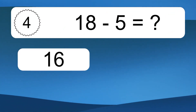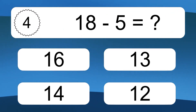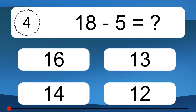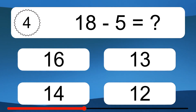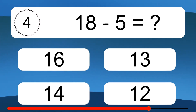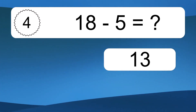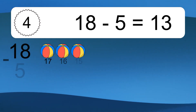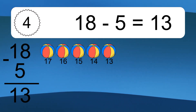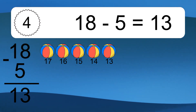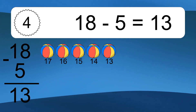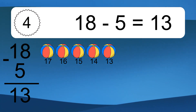18 minus 5 equals what? 18 minus 5 equals 13. Let's count it: 17, 16, 15, 14, 13.